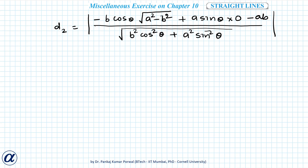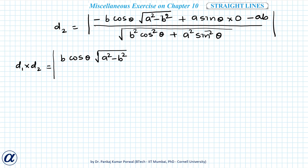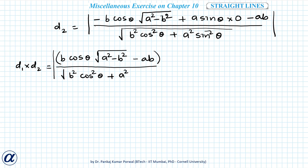Now we have to find the product d1·d2. Writing the whole thing under a single absolute value sign, the numerator becomes: b·cosθ·√(a²−b²) − ab, multiplied by −b·cosθ·√(a²−b²) − ab, all divided by b²cos²θ + a²sin²θ.